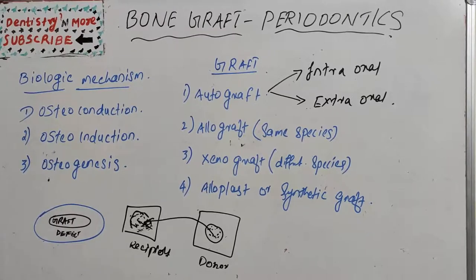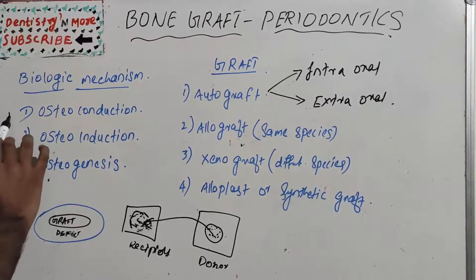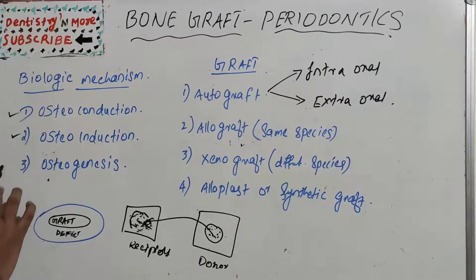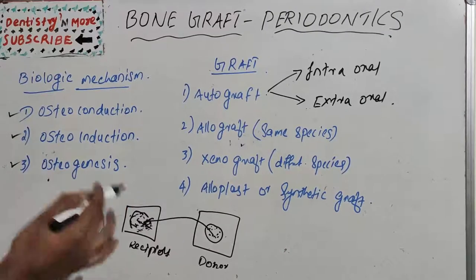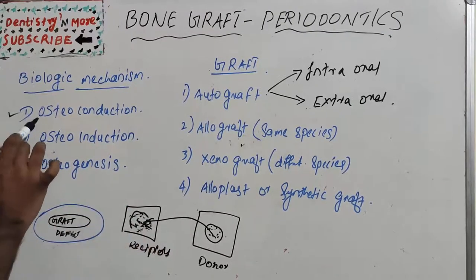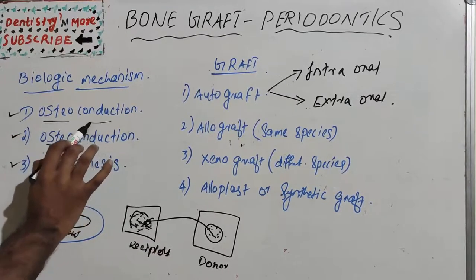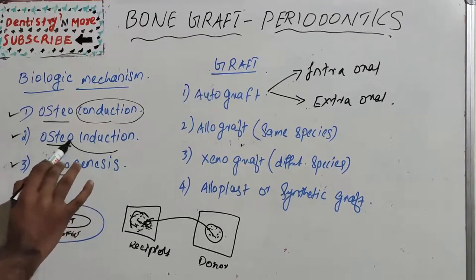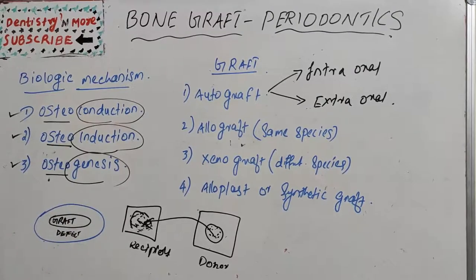There are three biologic mechanisms involved in grafting: osteoconduction, osteoinduction, and osteogenesis. These describe how new bone forms at the recipient site. All three share the prefix 'osteo' meaning bone — formation via conduction, via induction, and via the natural process of genesis.